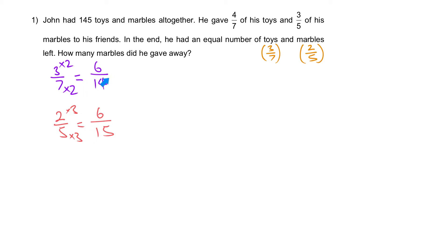Now after they have achieved the same numerator, the denominator represents their own total. This means there are 14 units of toys and 15 units of marbles in total. Altogether, that is 29 units.